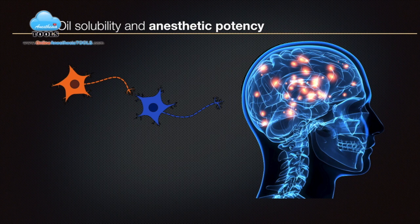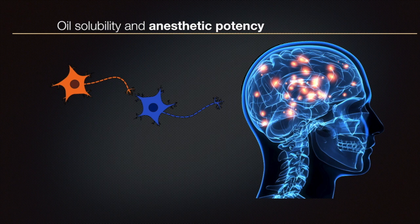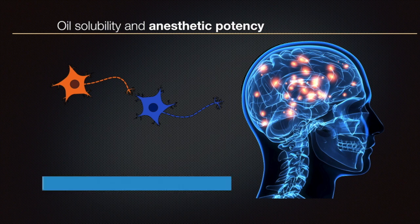Now, is blood-gas partition coefficient the only factor determining the anesthetic profile? The answer is no. Fat is an important constituent of many body tissues, being present in cell membranes and neurons in particular. Fat and oil are similar, and because it is easier to measure solubilities in oil, it is oil that is normally used for measurements. Agents that have the highest oil solubility are found to have the greatest potency as anesthetics, and this was the basis of the Meyer-Overton theory of anesthesia.